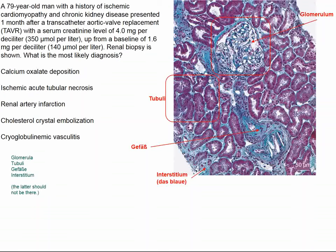We look at the tubules and the interstitium, which holds the kidney together. In this particular biopsy, what concerns us is that this glomerulus looks rather ischemic and sick, this blood vessel is closed, and the tubules look pretty good. The interstitium has not increased much. In this closed blood vessel, there are remarkable open clefts, indicating cholesterol emboli, because the cholesterol material is removed by the fixative, which leaves these clefts.